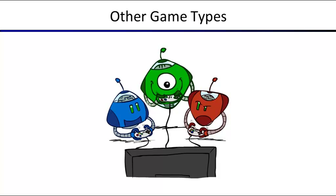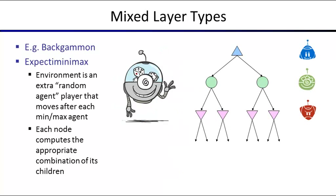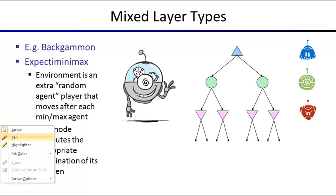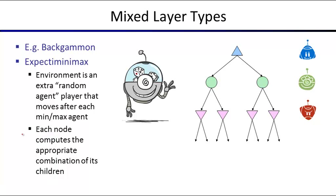What are some other game types? We've seen games with an adversary and games with a chance node. You can also have games where they're all interleaved. Backgammon is an example: you play against somebody else, but each of you also rolls dice. There's a chance node for the dice roll, then a maximizer node for your move, then a chance node for the opponent's dice roll, then a minimizer node for their move, and so forth — an interleaving of all three node types. You just dispatch based on what kind of node you're at.